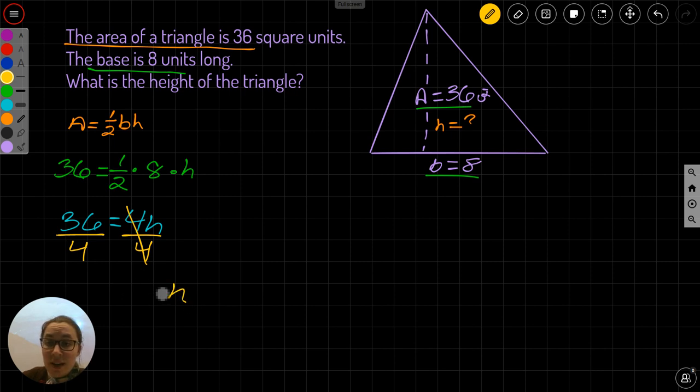Now I have only H on this side and 36 divided by 4 is 9. So our height is 9 units.